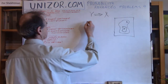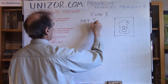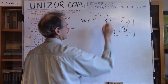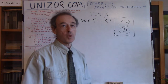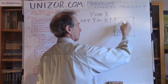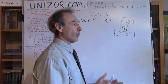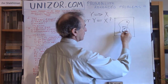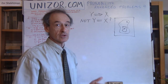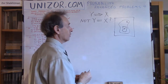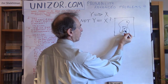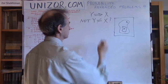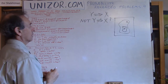True or false: from NOT Y follows X? What is NOT Y? It's everything outside of Y graphically. I know the point falls inside NOT Y — everywhere outside of Y. Does it automatically mean X happens, that the point is inside X? No, not at all. Consider a point outside Y but also outside X — it belongs to NOT Y but not to X. So this does not follow. This is false.